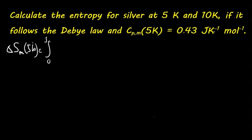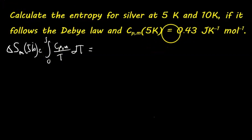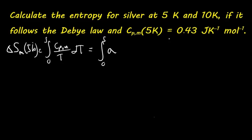We set up the integral from 0 to 5 of C_PM over T dT — this is our calculation for molar entropy. Using the Debye Law approximation, C_PM equals AT cubed, so we substitute that in, giving us A times T cubed divided by T, which simplifies to A times T squared, dT.